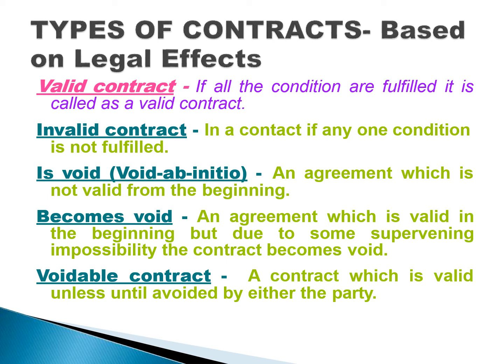Void ab initio means an agreement which is not valid from the very beginning — it was wrong from the start. 'Becomes void' refers to an agreement which was valid in the beginning but due to some supervening impossibility, the contract becomes void. For example, every country has a rule that you cannot contract with an alien enemy. If we belong to India and our country goes to war with another country, people of that country become alien enemies. Our contract was valid before the war, but when circumstances changed and war broke out, it becomes void.